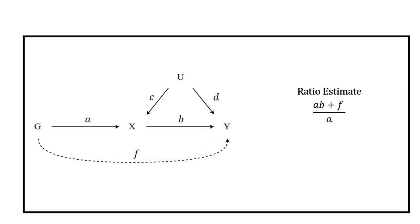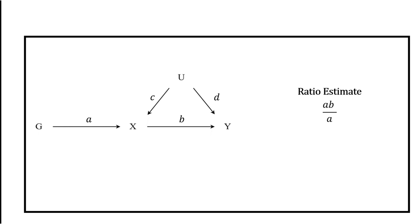When using multiple genetic variants, it is the weighted mean pleiotropic effect across the set that is important. If F is on average 0 across the set of variants, our estimate will still converge to the exposure-outcome association B. This leads to a distinction between balanced pleiotropy, where the mean pleiotropic effect is 0, and directional pleiotropy, where the mean is non-zero. Sensitivity analyses typically look at differences in ratio estimates, or heterogeneity, as an indicator of underlying problems, and can correct estimates provided additional assumptions about the distribution of pleiotropic effects are satisfied.